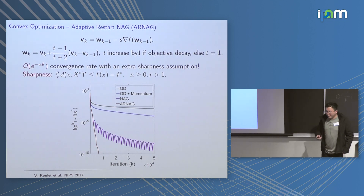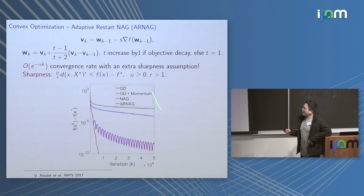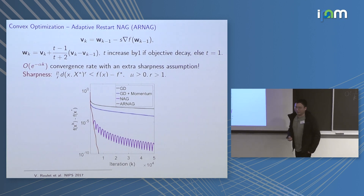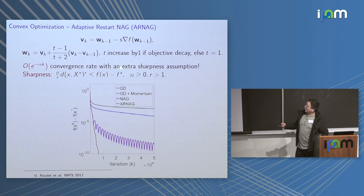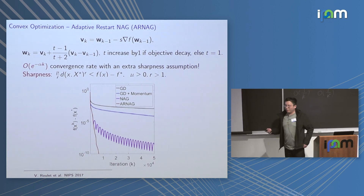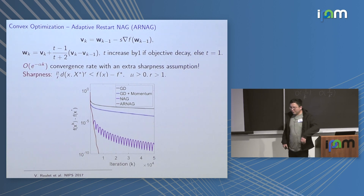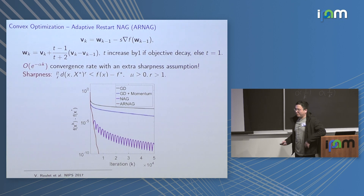Sharpness is easy to verify in practice, though these theoretical results are for convex problems. If something is flat, gradient descent won't move anyway, so sharpness is a reasonable assumption. Comparing convergence: gradient descent, gradient descent with momentum (heavy ball), Nesterov accelerated gradient — much better. Adaptive restart achieves linear convergence (the red curve), and scheduled restart, done appropriately, also achieves linear convergence.